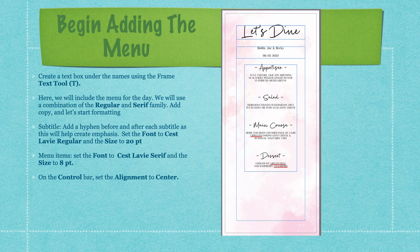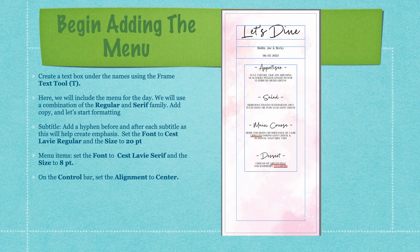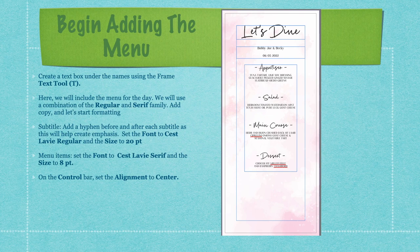Begin adding the menu by creating a text box under the names using the frame text tool. We'll include the menu for the day using a combination of the regular and serif family. Add a hyphen before and after each subtitle to create emphasis. Set the font to Sailor V Regular and the size to 20 points for subtitles like Appetizer, Salad, Main Course, and Dessert. For the menu items, set the font to Sailor V and the size to 8 point, with alignment set to center.